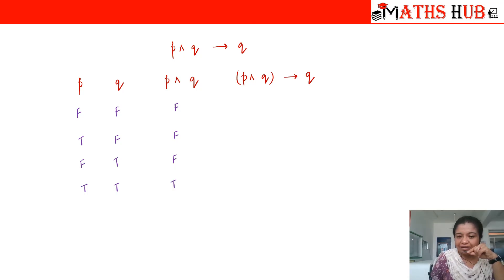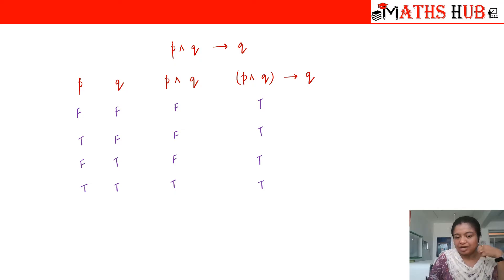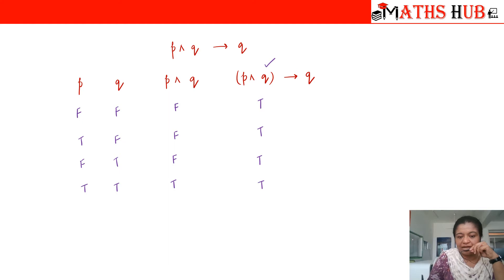Now for (p∧q)→q: false implies false is always true, false implies true is also true, and true implies true is also true. So if you check the truth values of the last column, the compound proposition is always giving you a true value irrespective of your input variables.